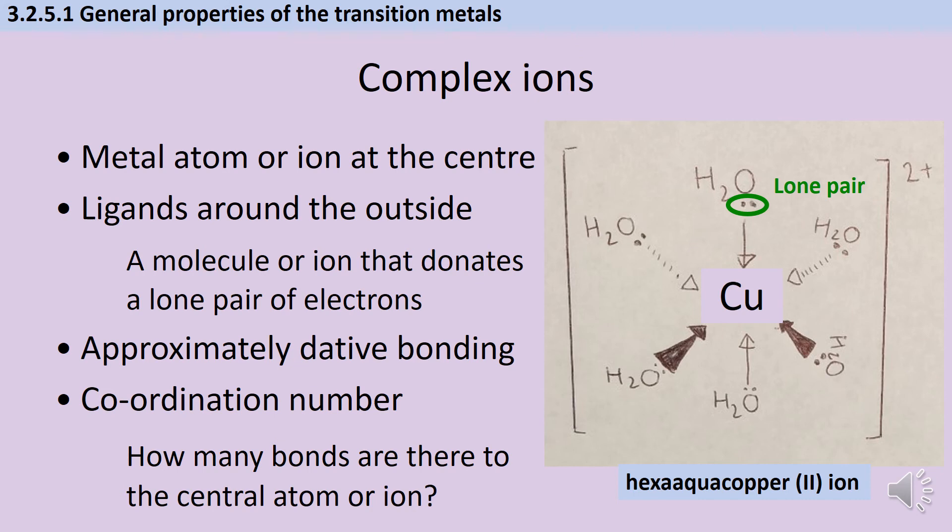You're also going to need to be able to discuss what's called the coordination number, which is basically how many bonds are there to the central atom or central ion. Here I've drawn a hexa-aqua copper(II) ion and you can see that there are six water molecules each donating a lone pair of electrons. Because there are those six ligands each forming a single bond, we would say that this ion has a coordination number of six.